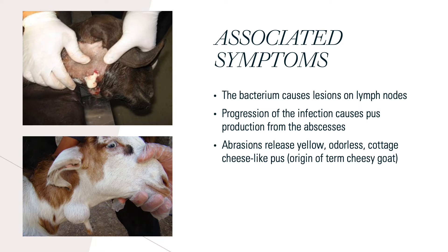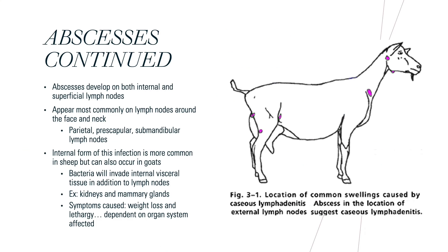The term cheesy goat comes from the appearance of the pus from a lesion caused by this bacterium. Infected animals develop abscesses that release very thick, yellow, odorless cottage cheese-like pus that we can see here in this picture on the top left. And below that is an example of the inflamed lymph node that a goat will have when having this disease. The abscesses occur most commonly in the lymph nodes around the face and the head, with the most common sites including the parietal, prescapular, and submandibular lymph nodes that have been outlined here in this diagram as well.